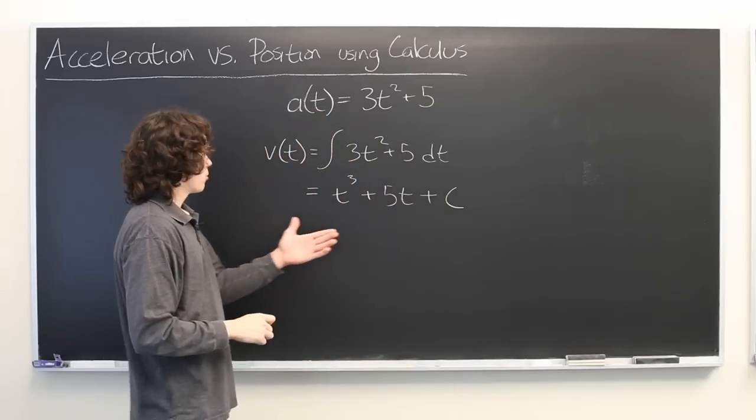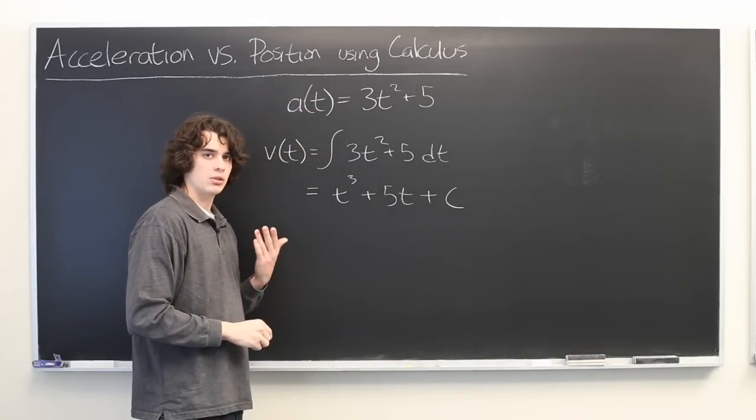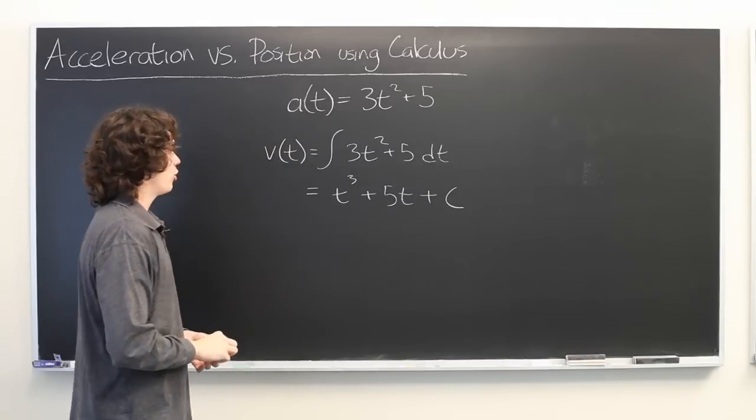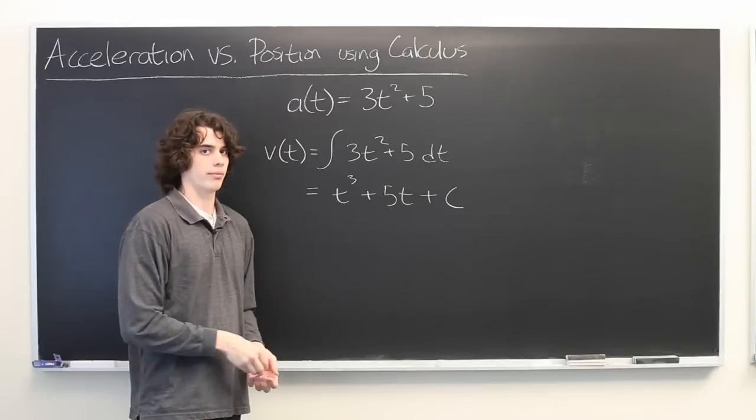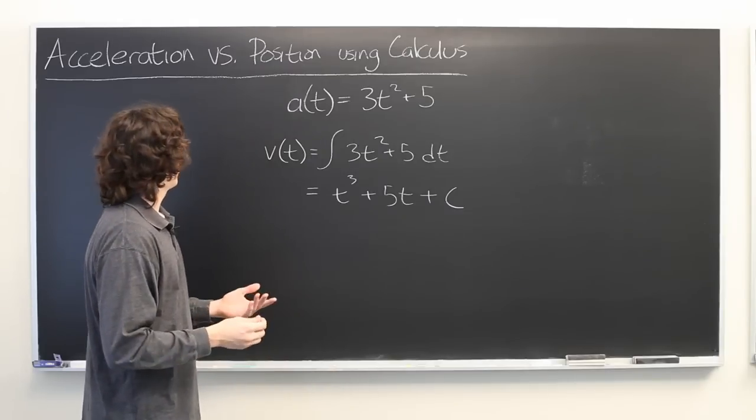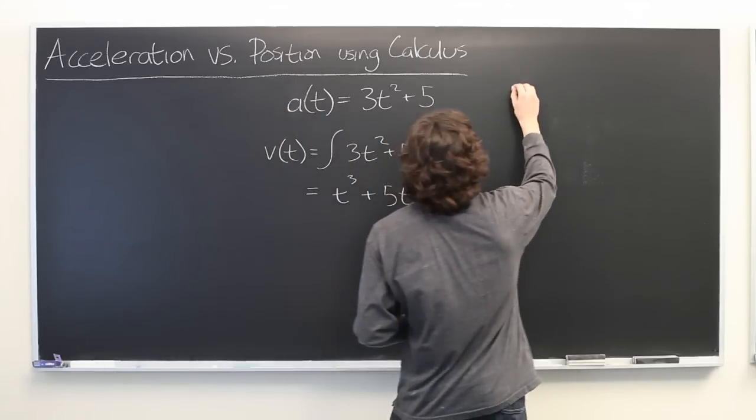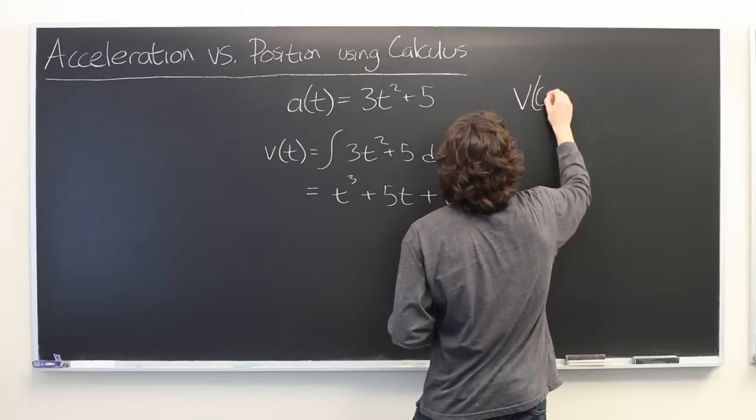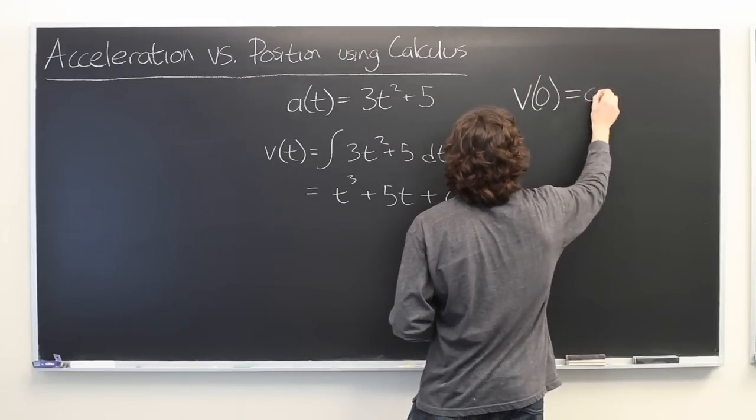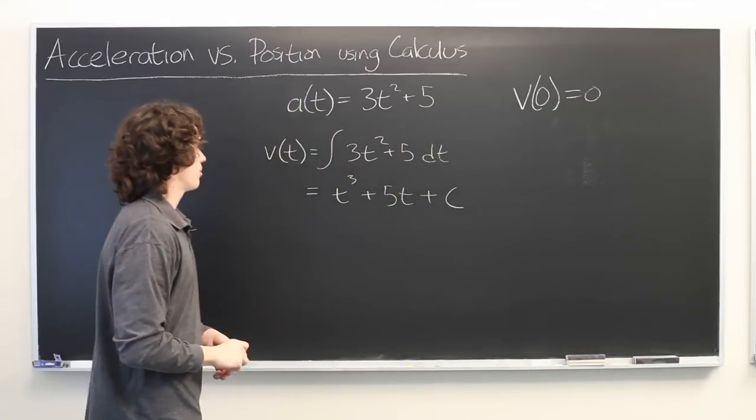Now, here, in order to determine c, we need to have at least one other piece of information, which is typically called an initial condition. For example, in the problem, you might be given something like v of 0 is equal to 0, meaning the object is stationary at time 0.